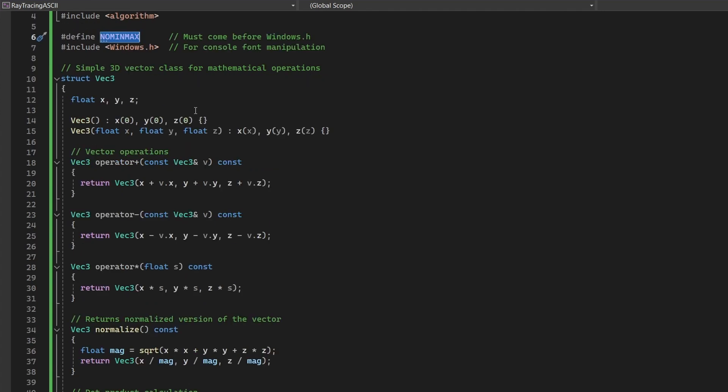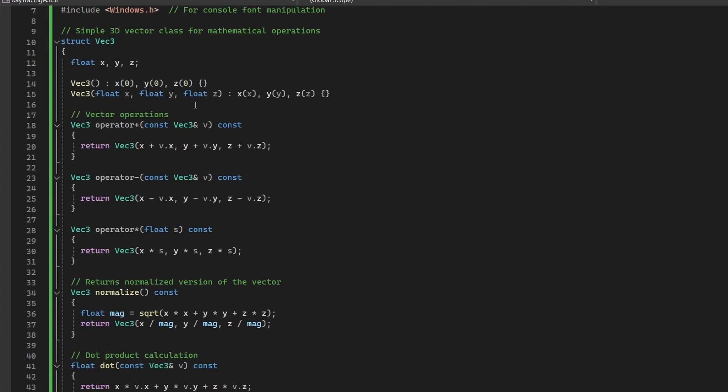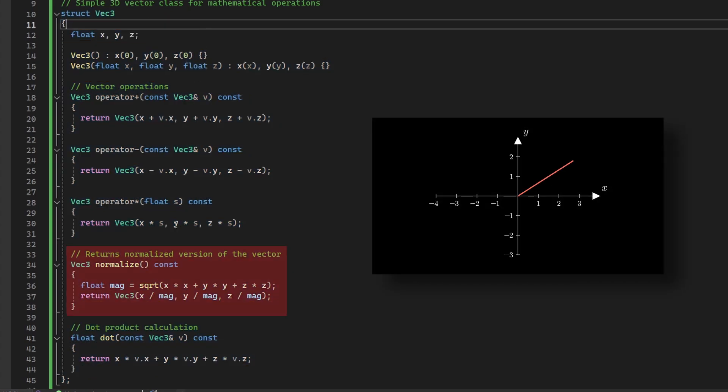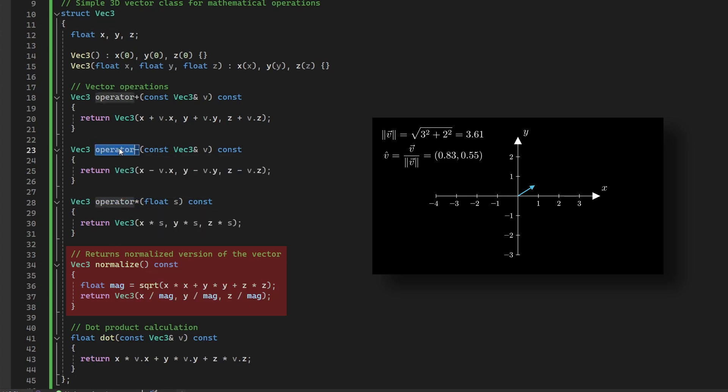The program defines a vector struct to represent 3D vectors. This provides basic vector operations such as addition, subtraction, scalar multiplication, normalization, and dot-product computation. These operations are fundamental for handling points in 3D space and performing lighting calculations. The overloaded operators make the code more readable and expressive when performing vector arithmetic.